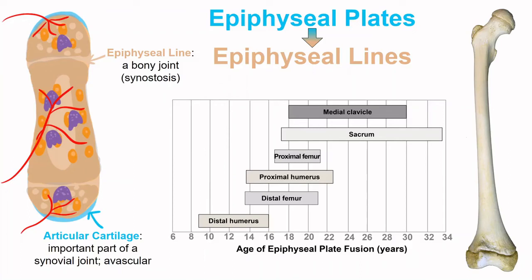The final step of endochondral ossification — when bones are fully formed and stop growing in length — does not happen in many bones until our mid to late 20s. The epiphyseal plates in the sacrum can remain open as cartilage into our early 30s. Different bones fuse at different times in the same person, and even different parts of the same bone can fuse at different times. Anthropologists will use the closure of a growth plate to determine the age of remains. This image shows epiphyseal plates where they exist in a femur.